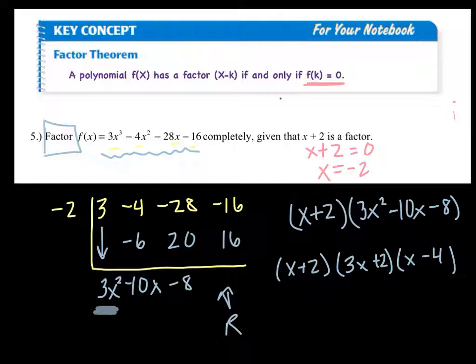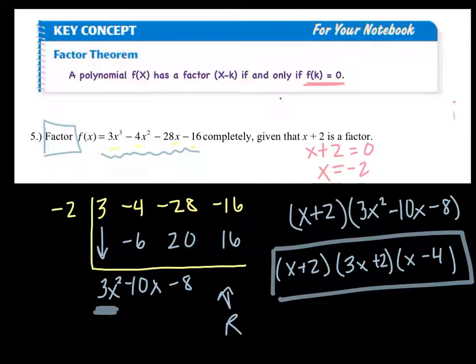So x plus 2, 3x plus 2, and x minus 4 are all factors of this polynomial. If you multiply them all back together, you should come back to what you started with, 3x cubed minus 4x squared minus 28x minus 16. So you have to find, you have to factor out that first expression and divide by that first to get it down to a squared polynomial which you guys know how to work with, because you know how to factor no matter what, as long as it is factorable.